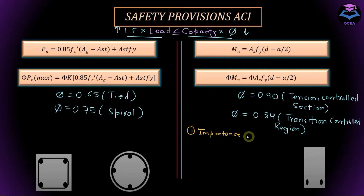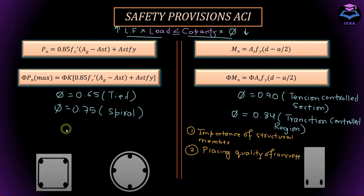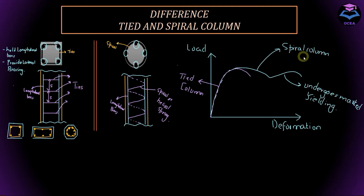Why are the strength reduction factors for columns less than those for beams? The first reason is the importance of the structure — if a beam fails it would be a localized failure, but if a column fails a large part of the building can fail, which can be disastrous. The lowest story columns are the most critical because they support the largest loads. The second reason is the difficulty of placing concrete in columns compared to beams or slabs. Also, the higher phi for spiral columns reflects their greater ductility — spiral columns undergo large permanent deformation before failure, whereas tied columns fail suddenly.